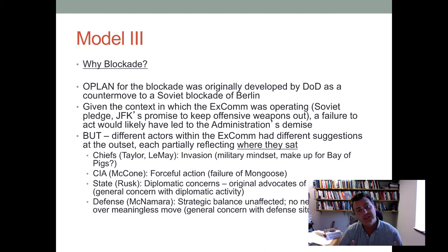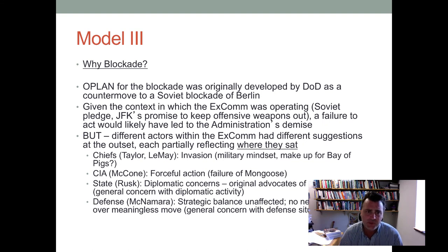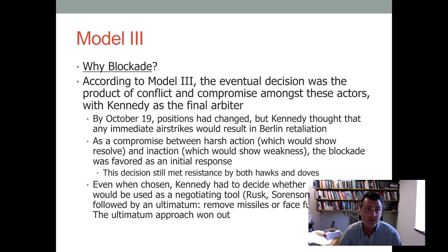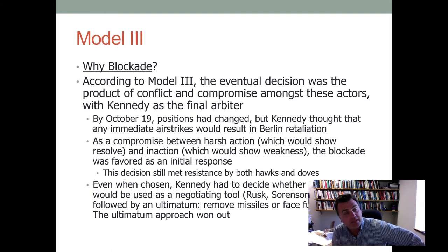The Department of State under Dean Rusk had diplomatic concerns — he originally advocated going to Castro himself, and there was uneasiness about how this would play out at the United Nations, with allies, and what message it would send to the Soviets. Secretary of Defense McNamara said the strategic balance was unaffected and there was no need to risk war over a meaningless move. The blockade was really seen as a compromise between different agents.